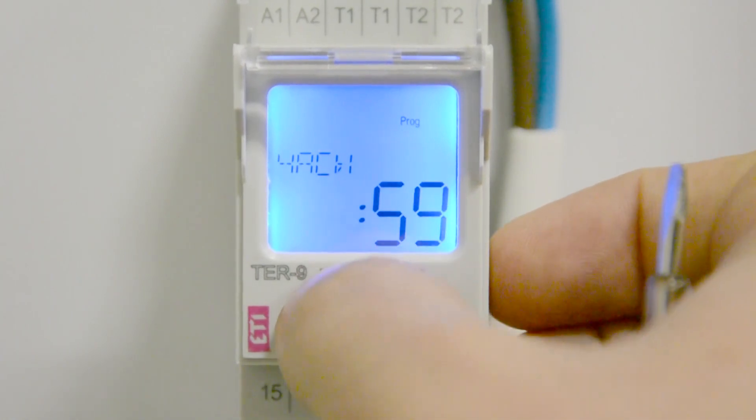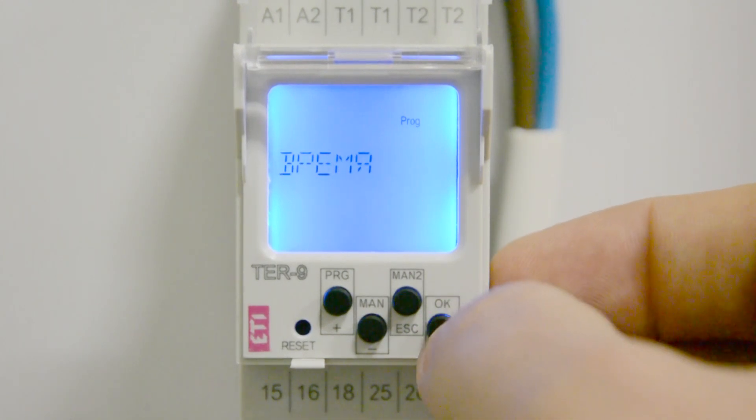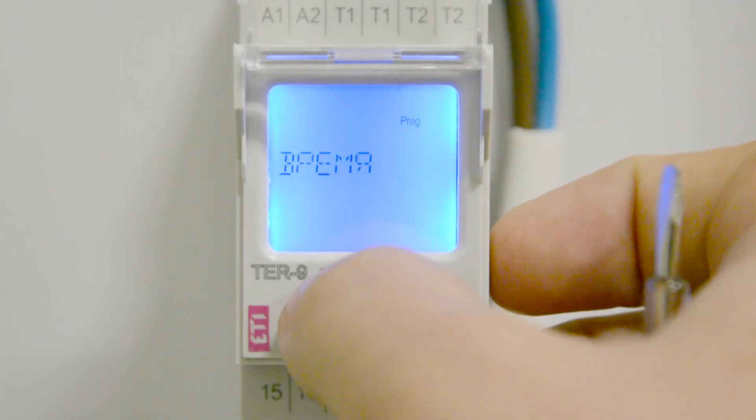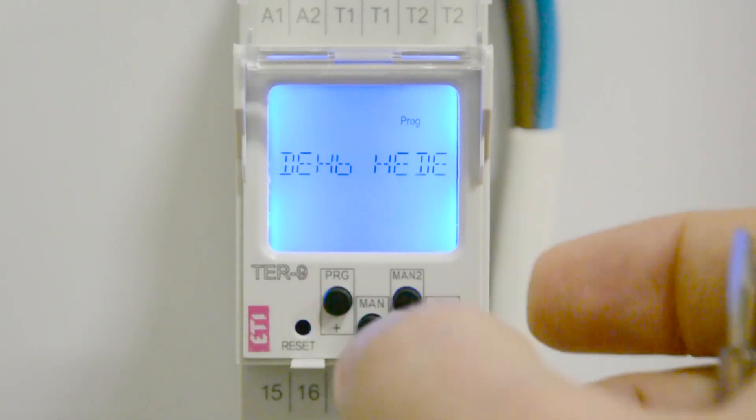Using the plus and minus buttons we then change the values. In this way, we can set the time and date, automatic transition to winter, summer time, day of the week, and the date format.